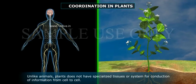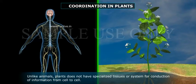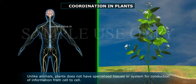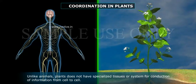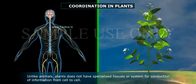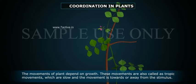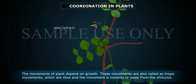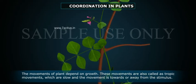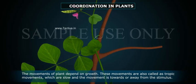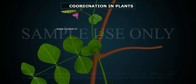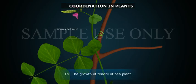Unlike animals, plants do not have specialized tissues or a system for conduction of information from cell to cell. The movements of plants that depend on growth are also called tropic movements, which are slow, and the movement is towards or away from the stimulus. An example is the growth of the tendril of the pea plant.